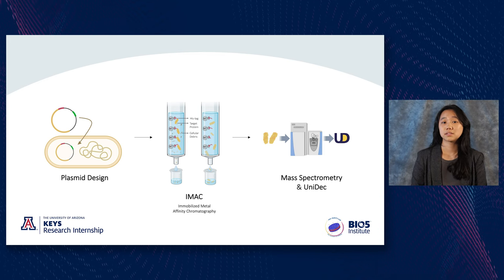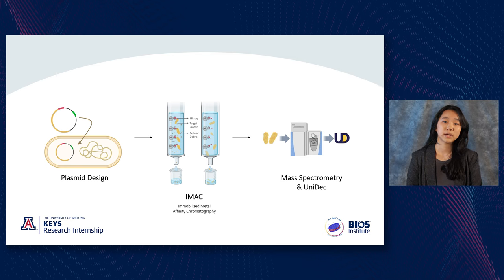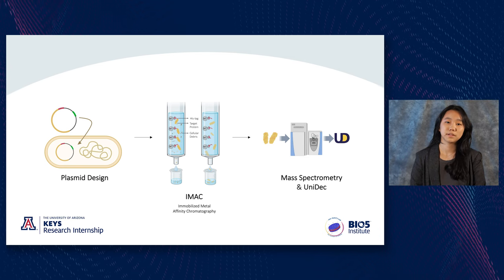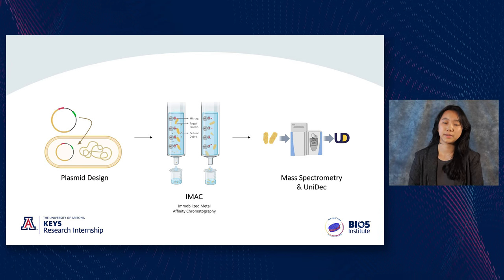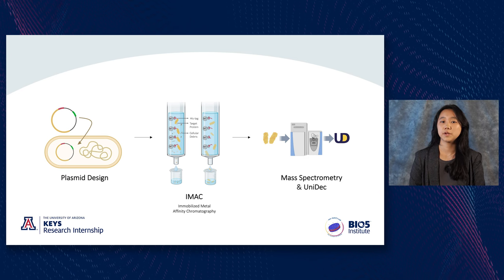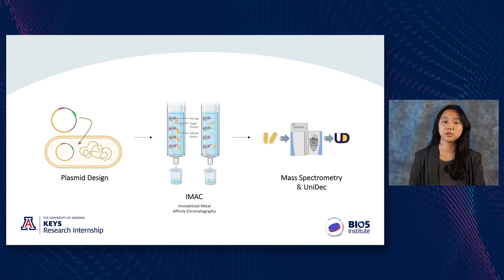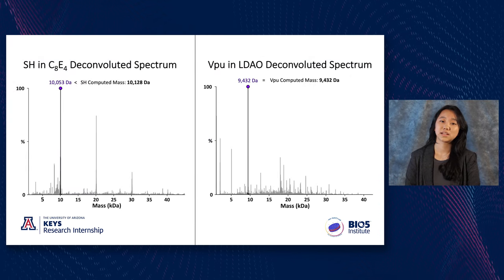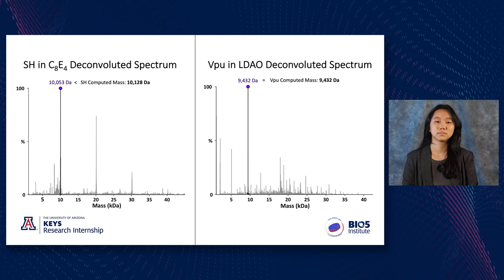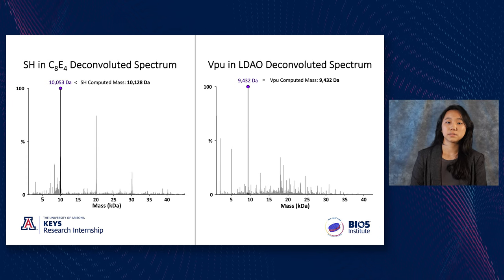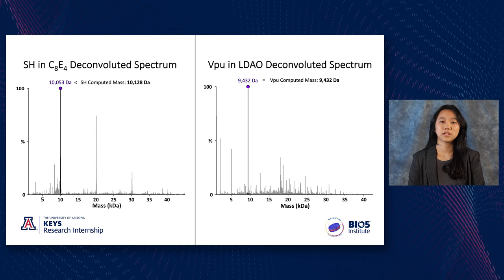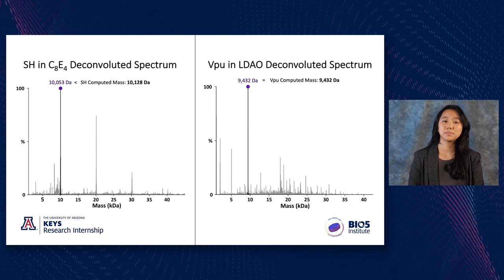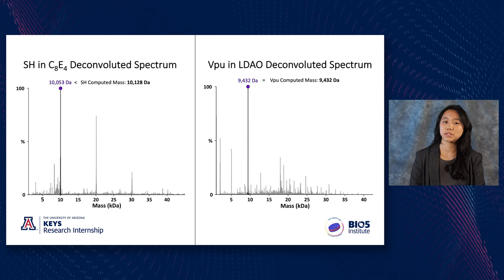After allowing the cells to grow, we lyse them and filter out the impurities and cellular debris with immobilized metal affinity chromatography. Afterwards, we confirm that we've isolated our protein using native mass spectrometry and my lab's UniDec software. UniDec produces these mass spectra so that if you look at the tallest peak, known as the base peak, it gives you the mass of the most abundant protein in the solution.